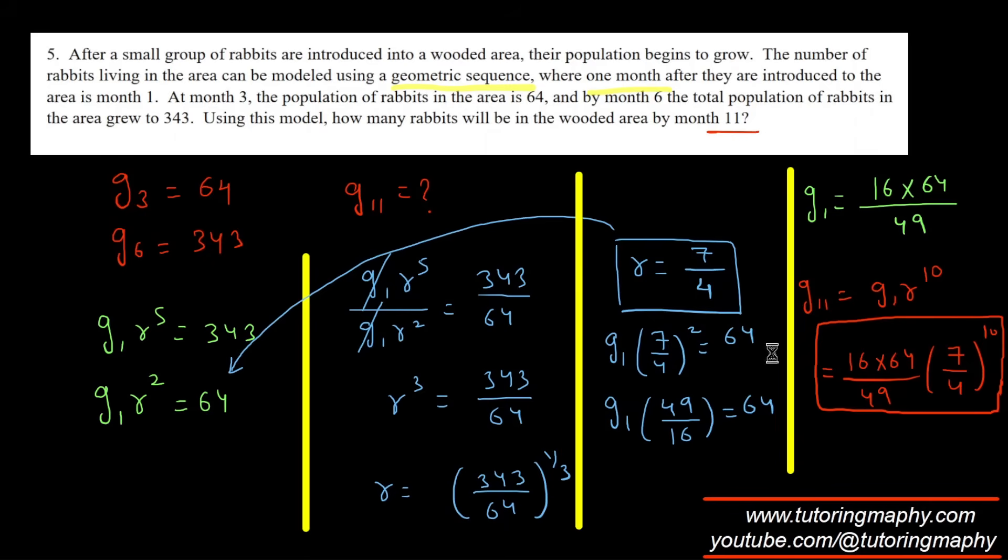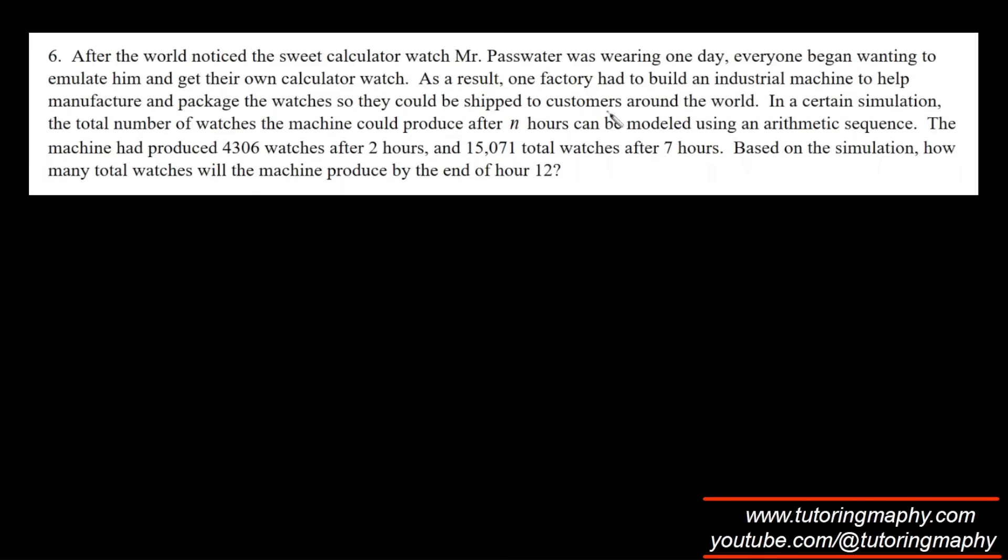Here we are given a word problem about a certain simulation. The total number of watches the machine could produce after n hours can be modeled by an arithmetic sequence. The machine had produced 4,306 watches after 2 hours, so I know that a2 is given as 4,306.